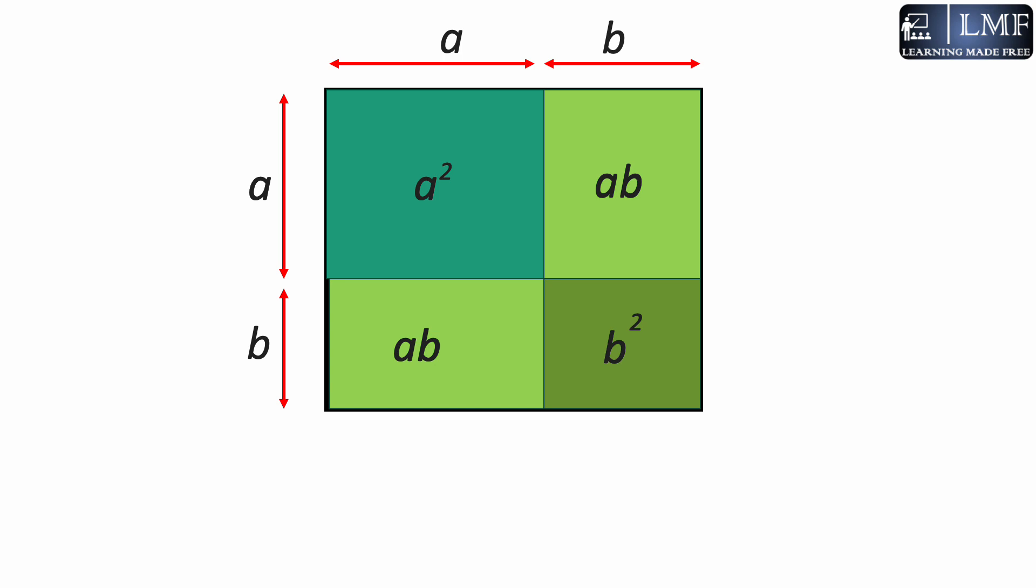Now to calculate the total area of this square, which was our initial problem, to calculate a plus b whole square, we will need to add the area of all these smaller pieces. Now the area of this bigger square a plus b whole square: a square plus b square plus ab plus ab.